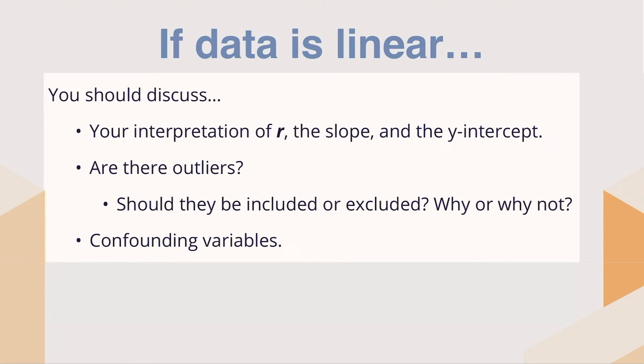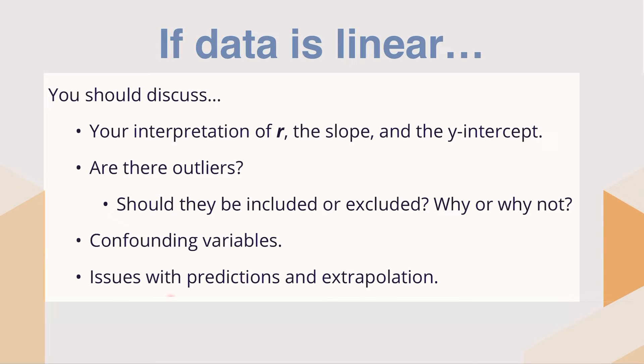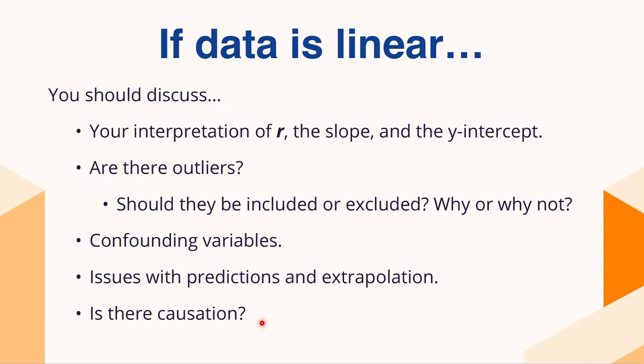Are there any confounding variables? Confounding variables are variables impacting your data that aren't directly in your data set. You also want to look at any issues with predictions or extrapolation. Predictions are when you use your trend line within the domain of your data set; extrapolations are when you go outside the domain — what kind of issues arise from that? And finally, is there any causation? Just because you've got a high correlation doesn't mean you've got high causation, so make sure you address that.